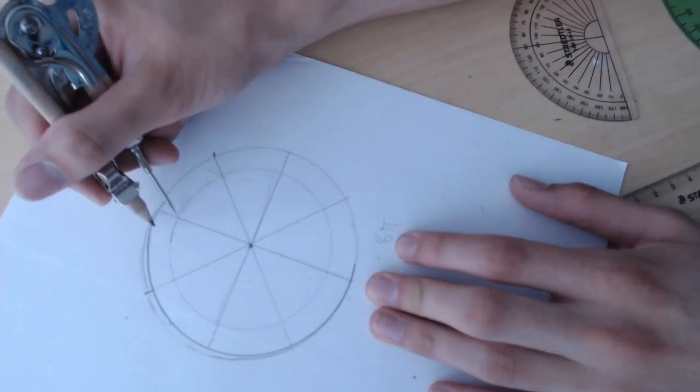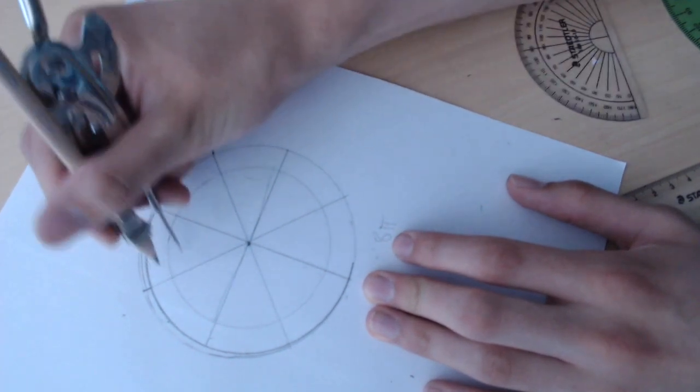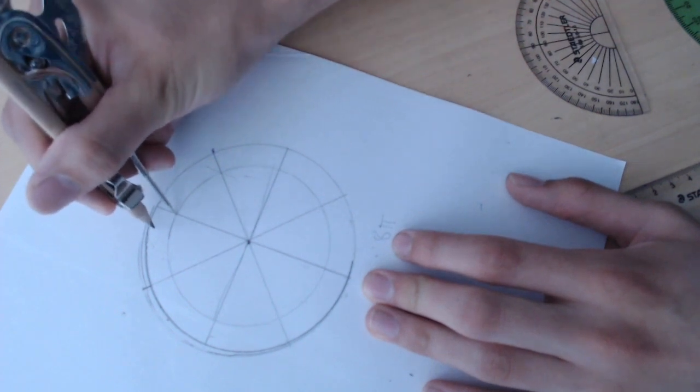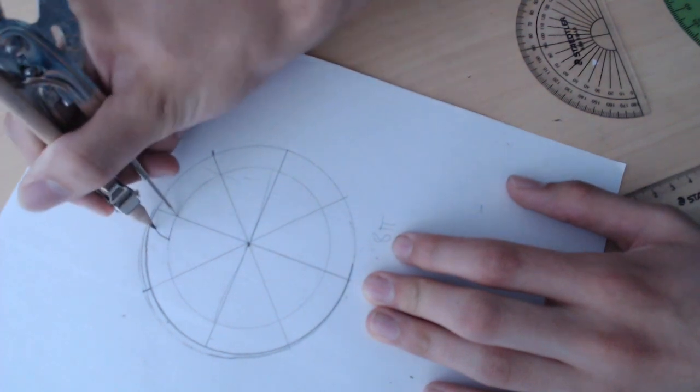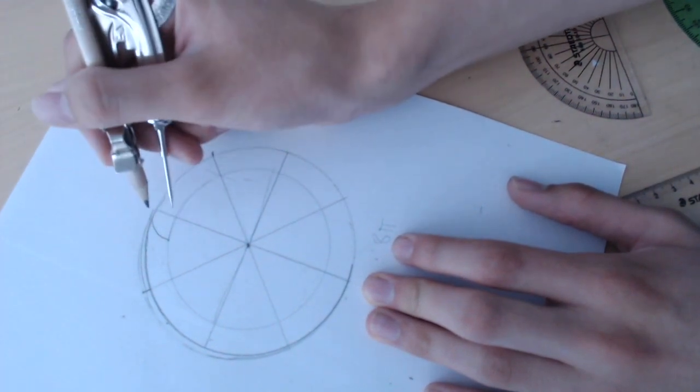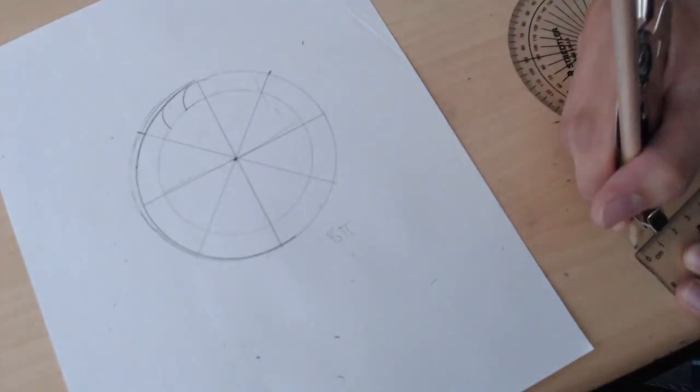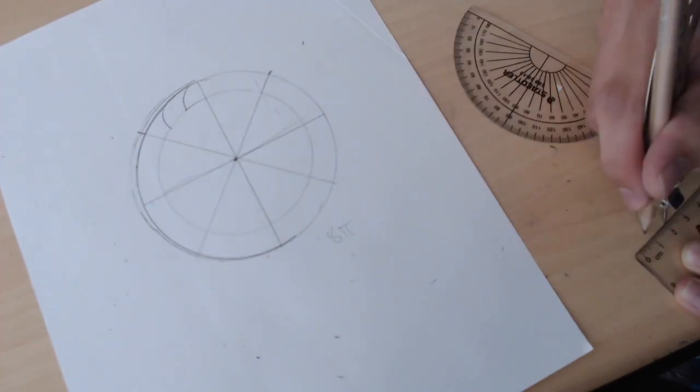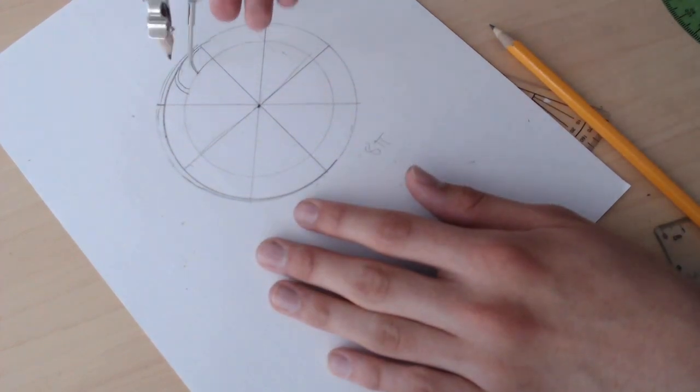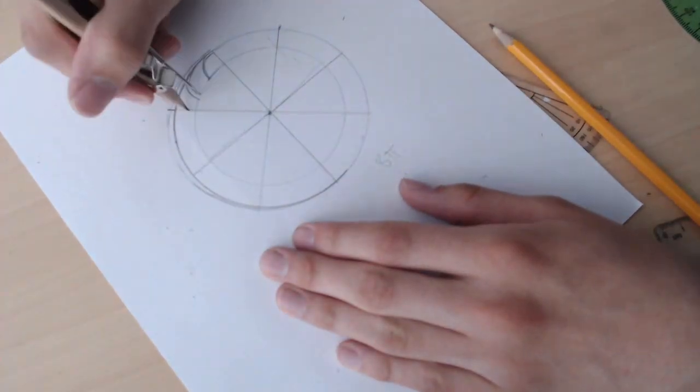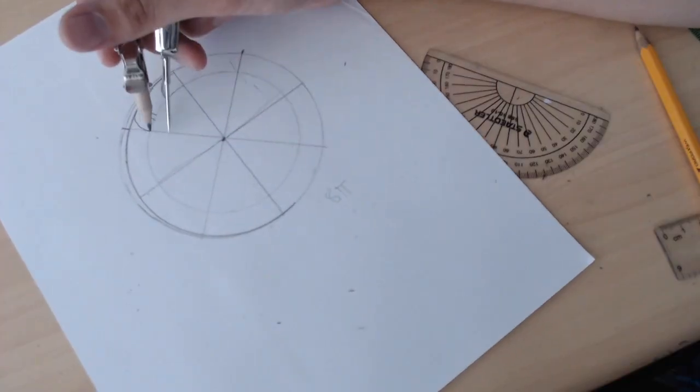So now we are actually going to divide the teeth. So find a point right here on one of these lines and what you want to do is go down and stroke up, just like that.